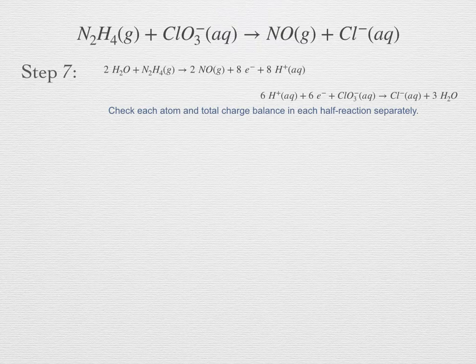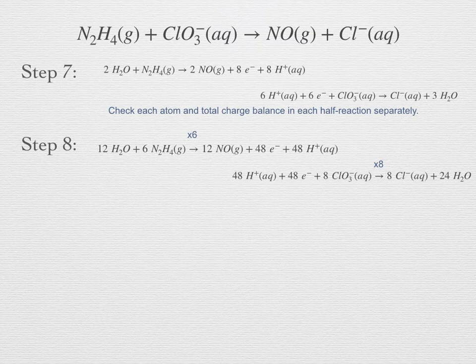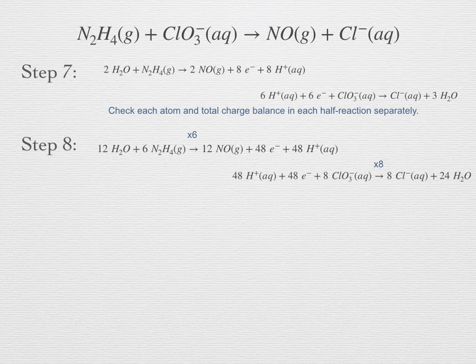It is probably worthwhile pausing playback to check that you can see this balance in atoms and charge. Now we scale the two half reactions so that they both involve the same number of electrons — multiply as needed to make them the same. You could look for a common multiplier, or you could multiply each reaction by the number of electrons in the other reaction and cancel any excess in the next step. In this case, we multiply the oxidation reaction by 6 and the reduction reaction by 8 — or, recognizing we can divide out 2, multiply by 3 and 4 respectively.